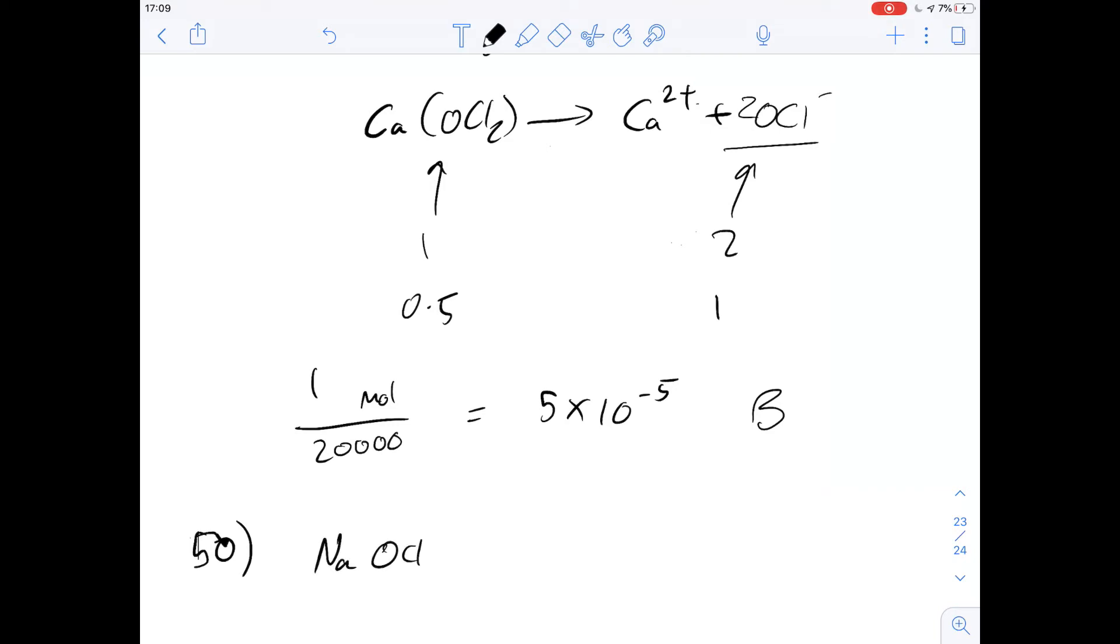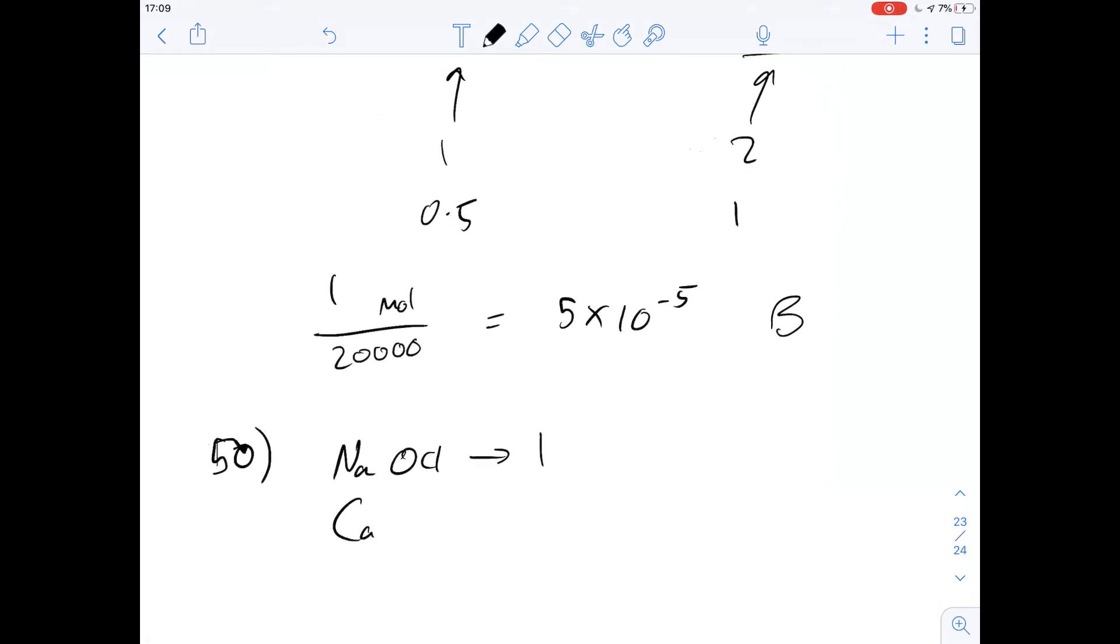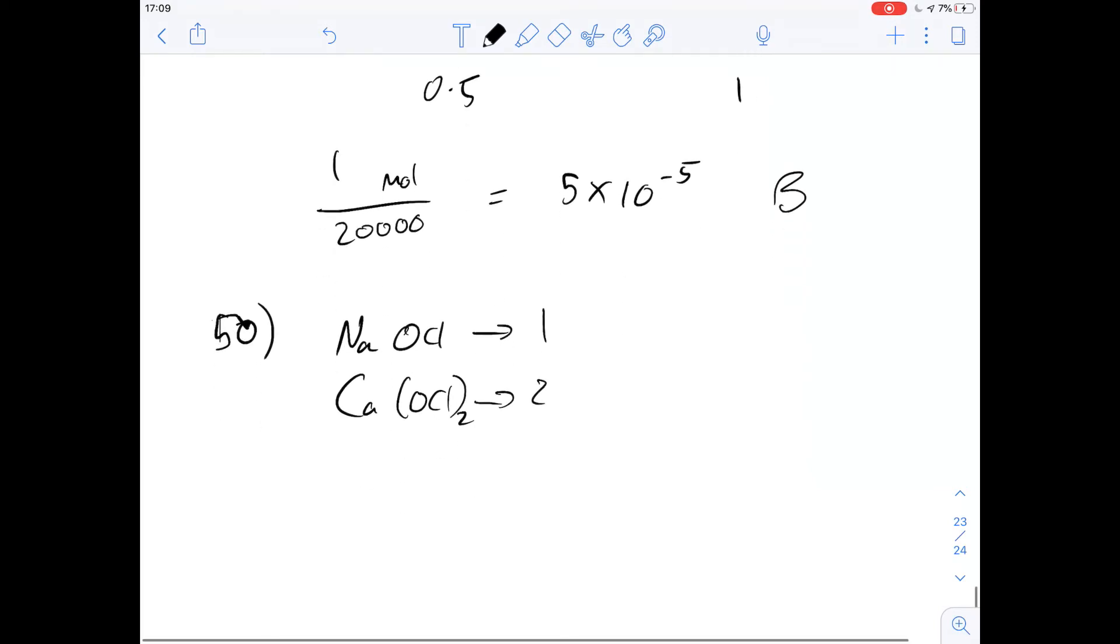So the first one, which is sodium hypochlorite, will produce one ion. If we look at calcium, as we know it will produce two. Third is going to be nitrogen trichloride. And we're told that it completely hydrolyzes to form hypochlorous acid, HOCl, which goes on to produce one ion. And then the last is going to be chlorine oxide, which again goes through this sort of pathway to produce one ion.